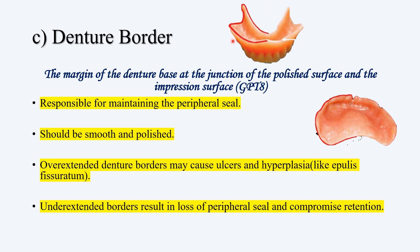You can see this is the denture border — this is for the mandible. Can you appreciate it? This is the polished surface and this is the impression surface. The denture border is the junction of the polished surface and the intaglio surface or impression surface. And this is the maxillary denture border.